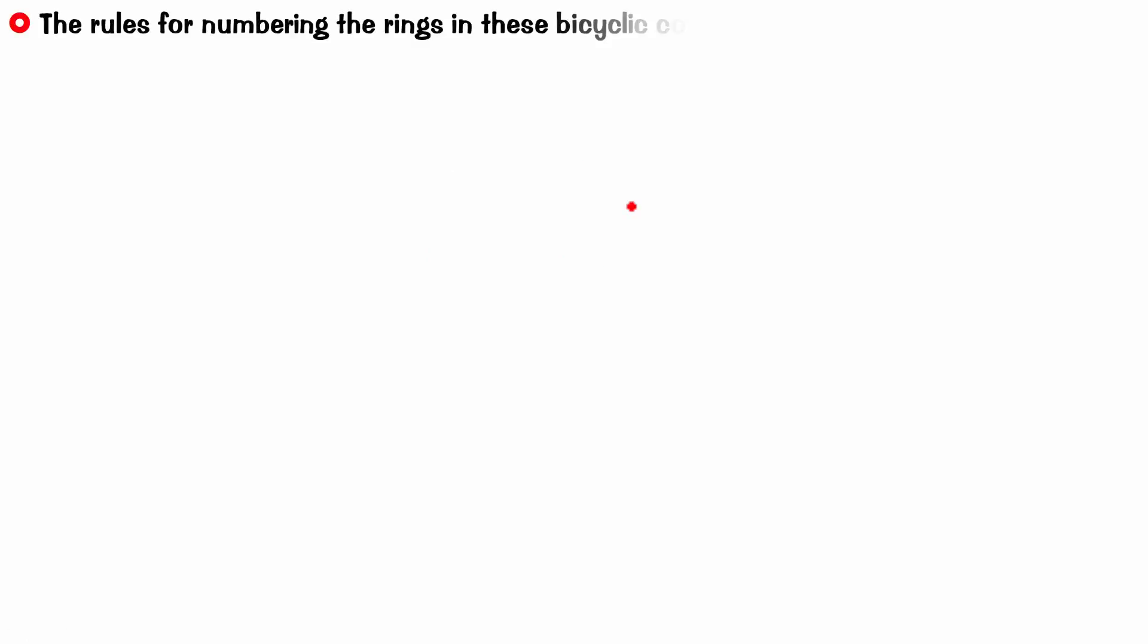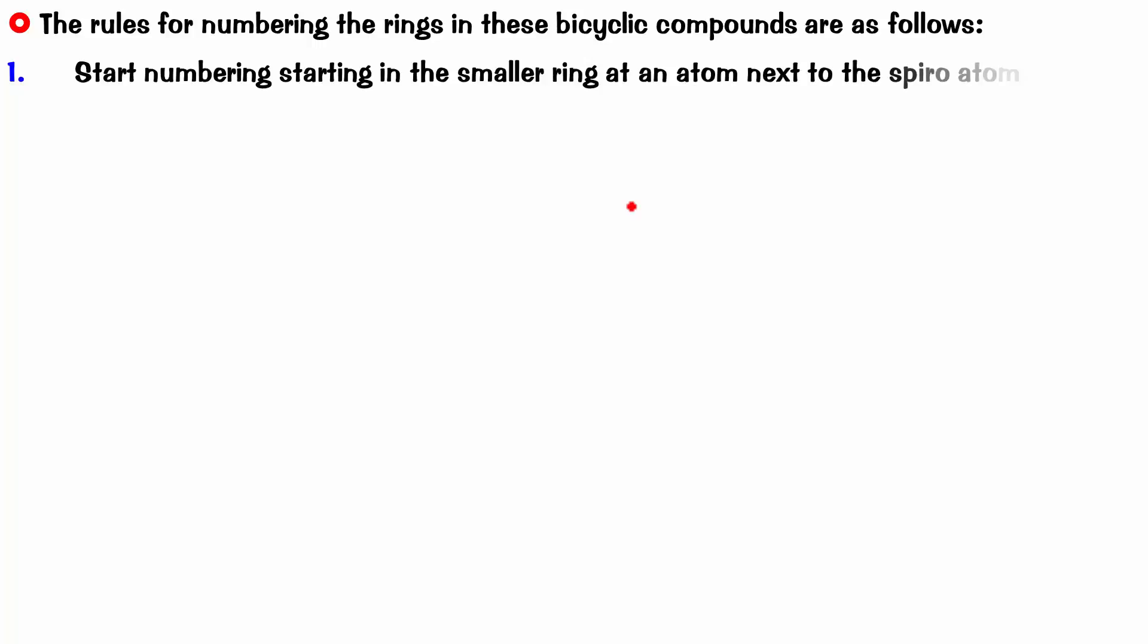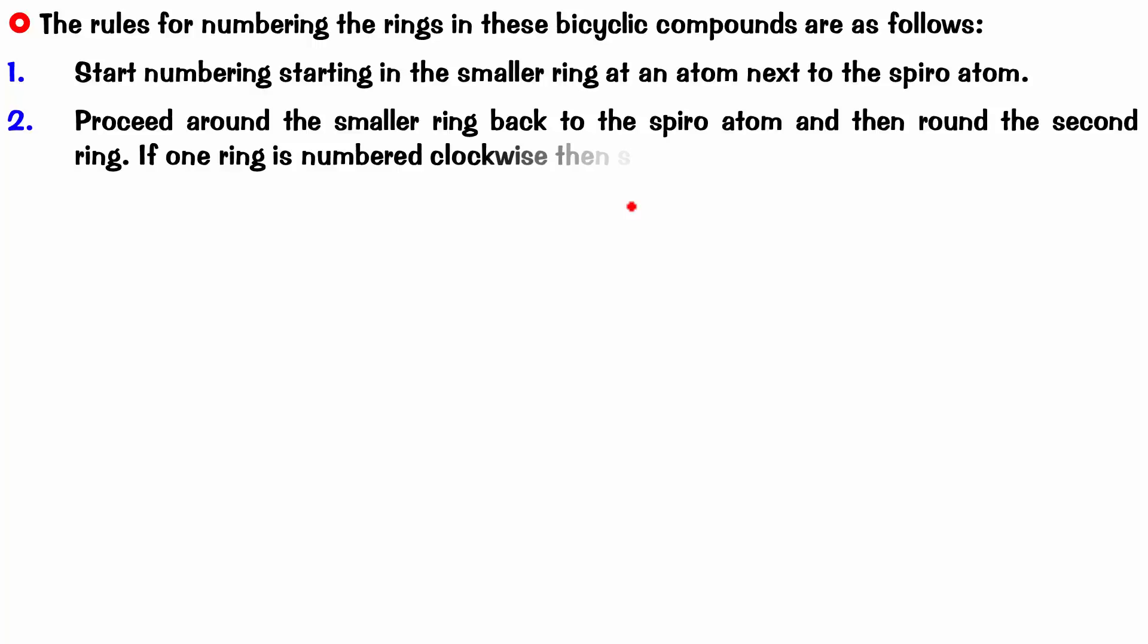The rules for numbering the rings in these bicyclic compounds are as follows. Start numbering starting in the smaller ring at an atom next to the spiro atom. Proceed around the smaller ring back to the spiro atom and then around the second ring. If one ring is numbered clockwise, then so should the other ring be.